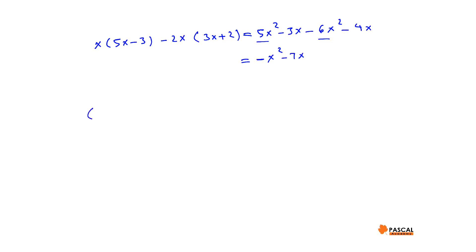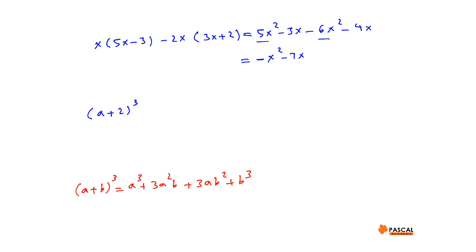Part E: (a plus 2) to the power of 3. Using the identity (A + B)³ = A³ + 3A²B + 3AB² + B³, we get (a plus 2)³ equals a³ plus 6a² plus 12a plus 8.